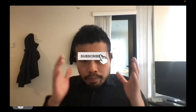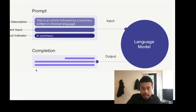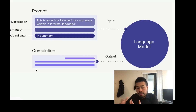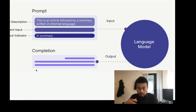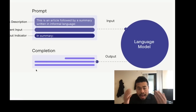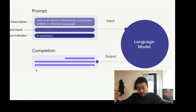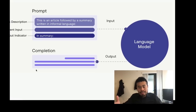Prompt engineering is the way that you interact with a language model — it's a lightweight way of programming. In the past you needed to write a lot of code, train a model, and tell the model to learn from training data. But now language models like ChatGPT and GPT-4 are just too powerful — you can just describe your task and ask the model to do it, and it will. NLP doesn't really require coding anymore.